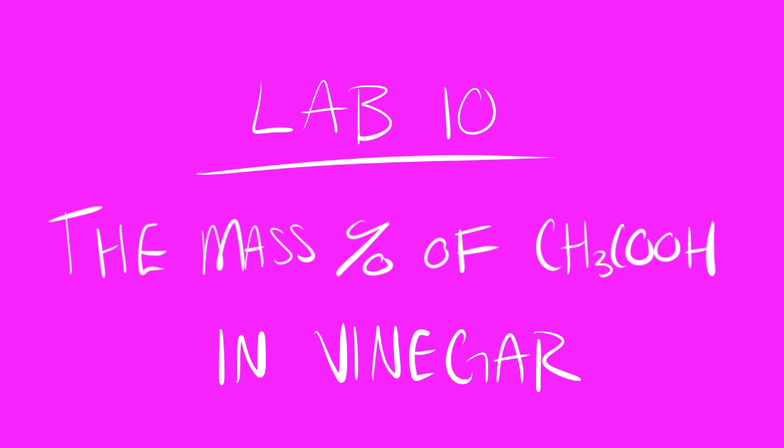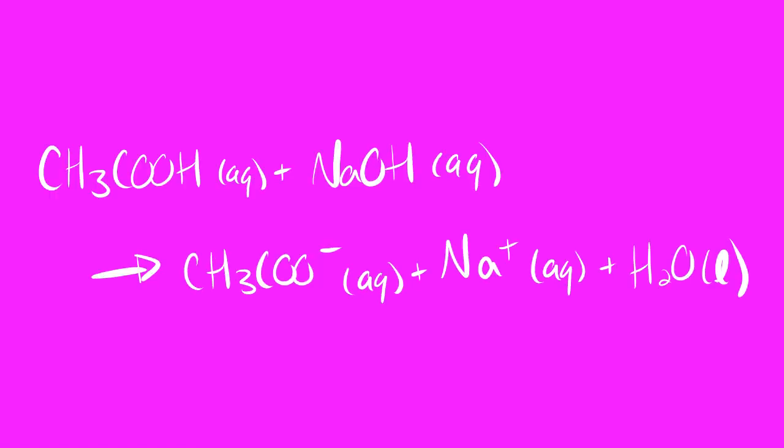To accomplish the calculation of figuring out what the mass percent of acetic acid in vinegar is, we are going to be performing a titration. As you can see here, we are going to be titrating the acetic acid with sodium hydroxide. The acetic acid is the CH3COOH in the reaction as a reactant.